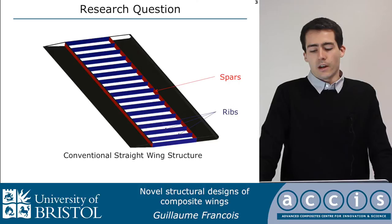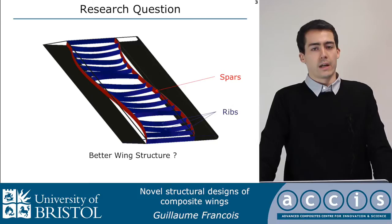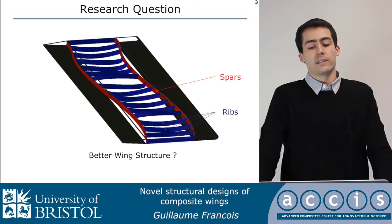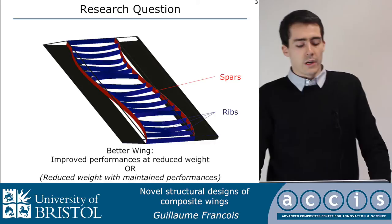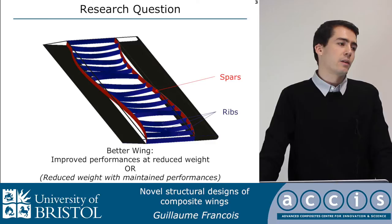The research question for this PhD was: what happens if we have curvilinear spars and curvilinear ribs? It can be summarized as: is this a better wing structure? A better wing structure is defined as a structure with reduced weight — or more precisely, a wing with reduced weight at maintained performances within a certain region.